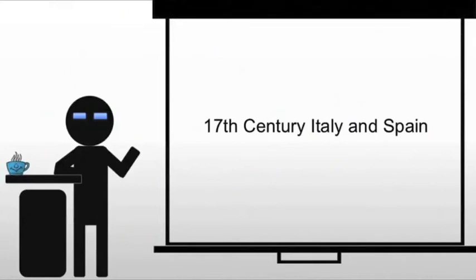We're now going to embark on the 17th century in Italy and Spain. Traditionally, European art of the 17th century is termed Baroque. This is, in fact, a pejorative term, meaning that the art is somehow uncouth, or at least not as good as the Renaissance.